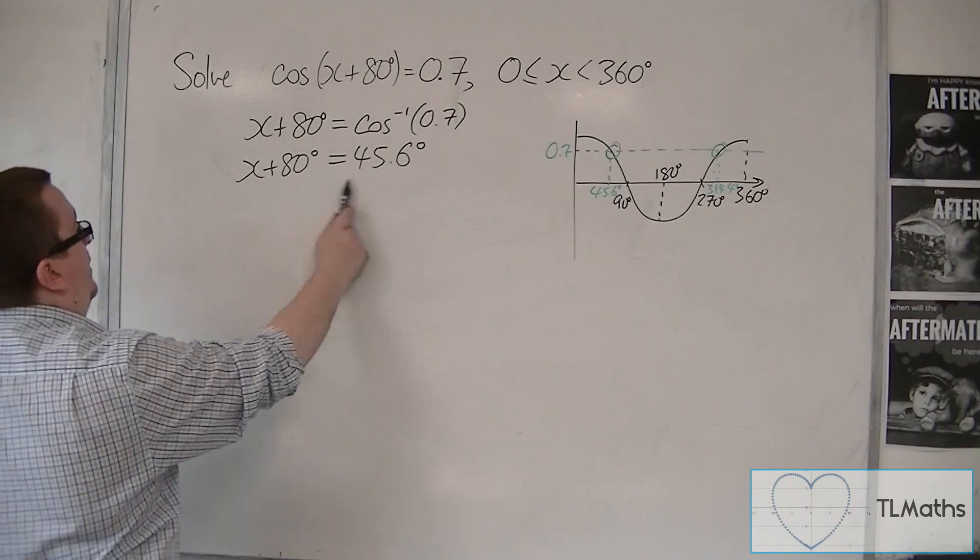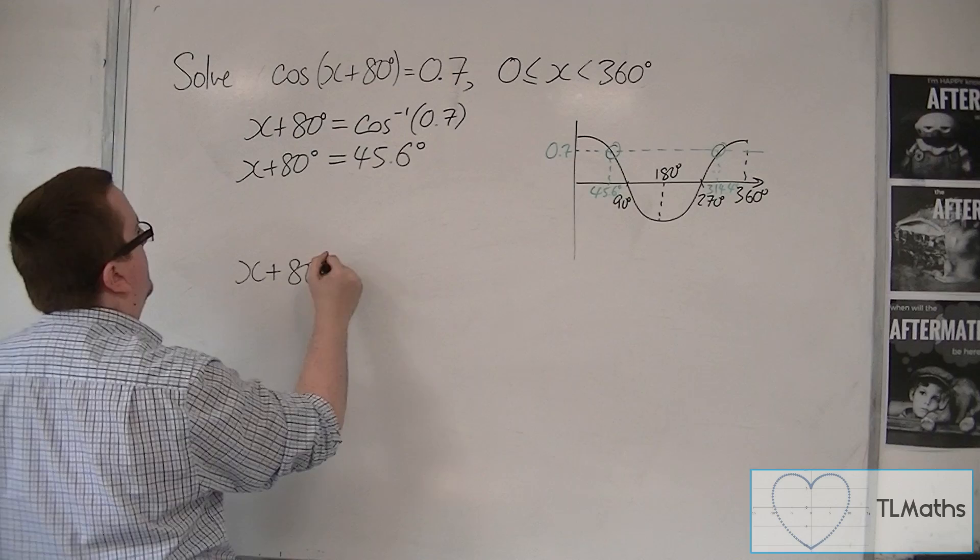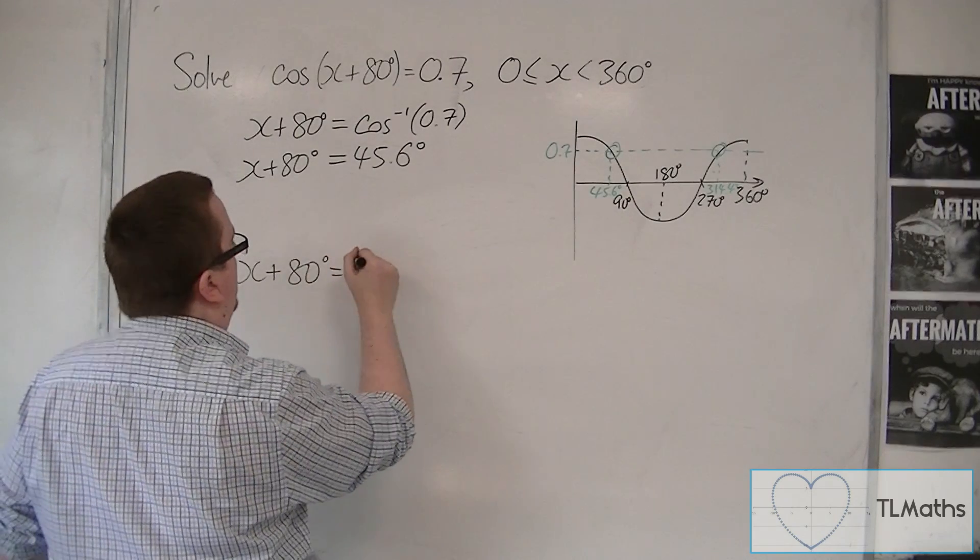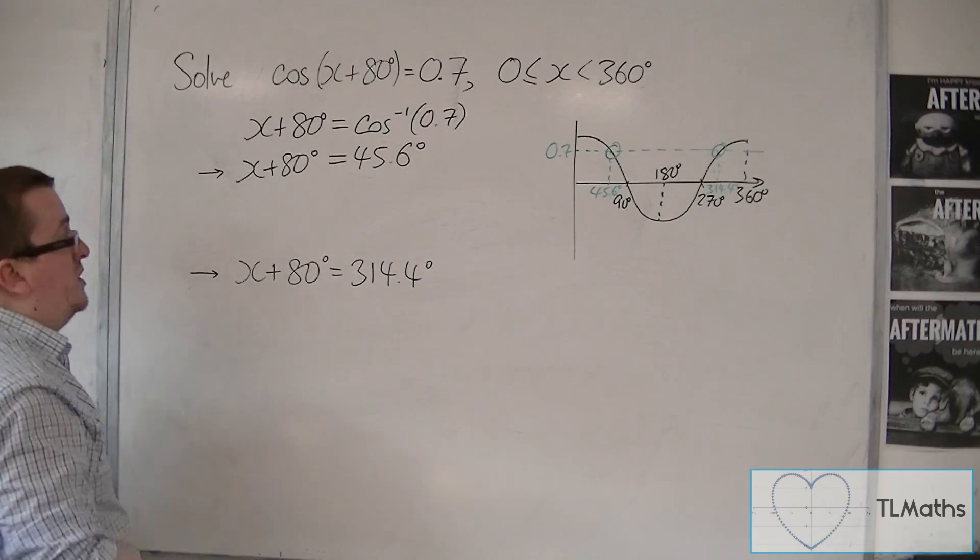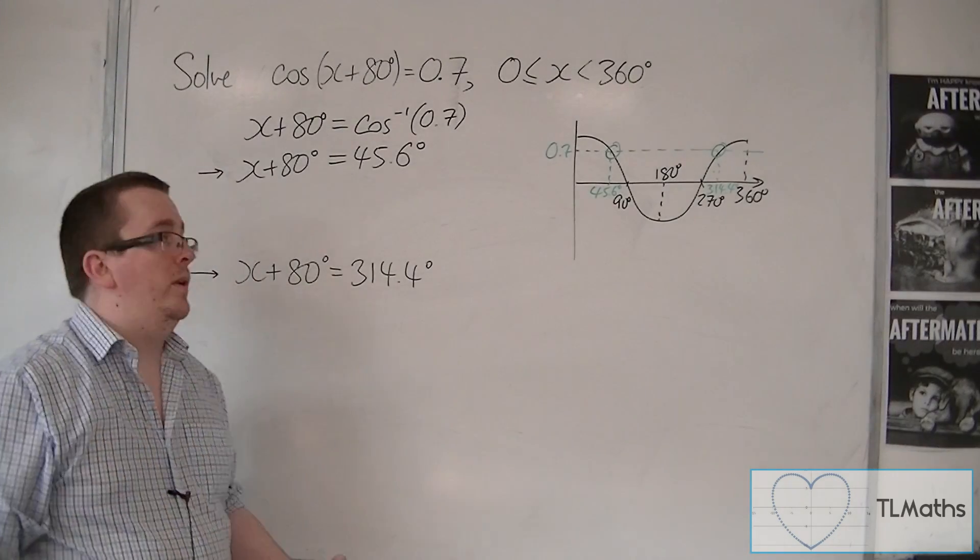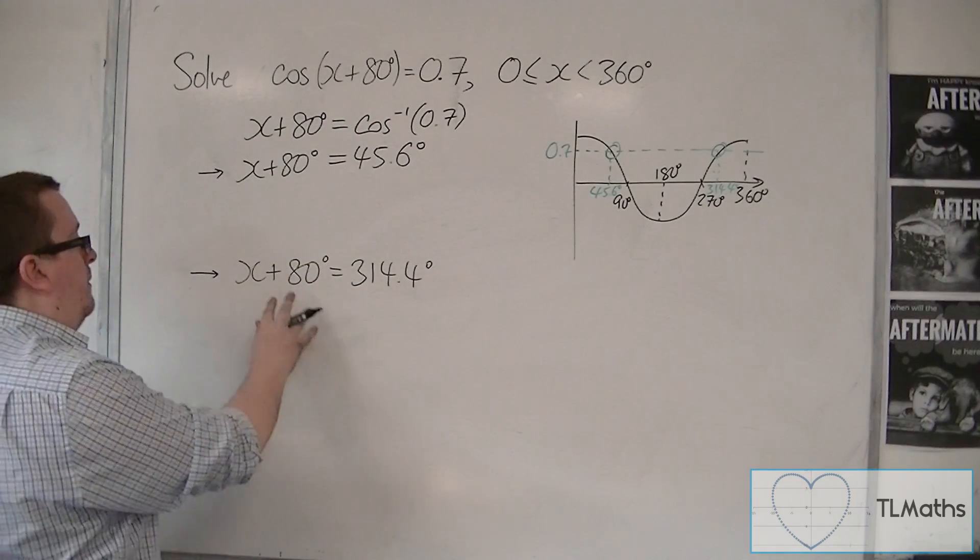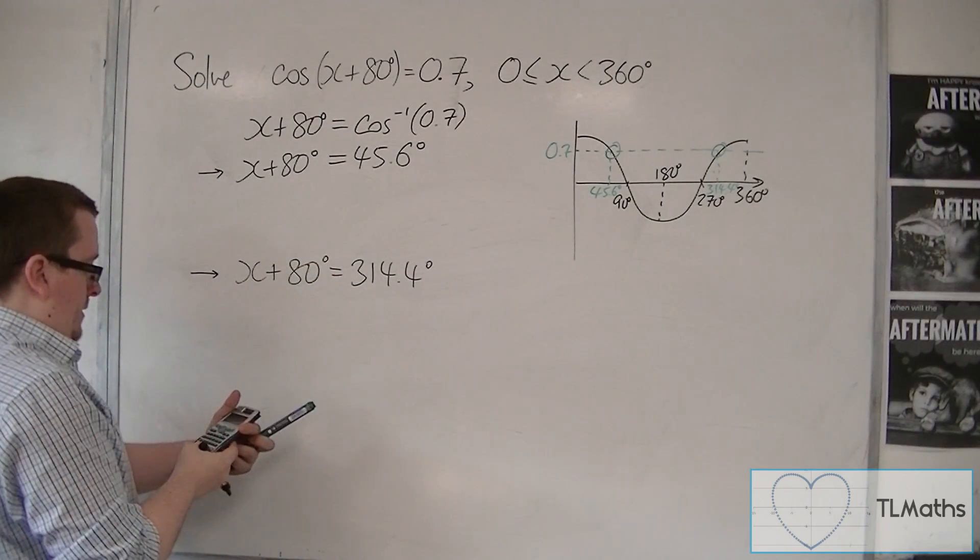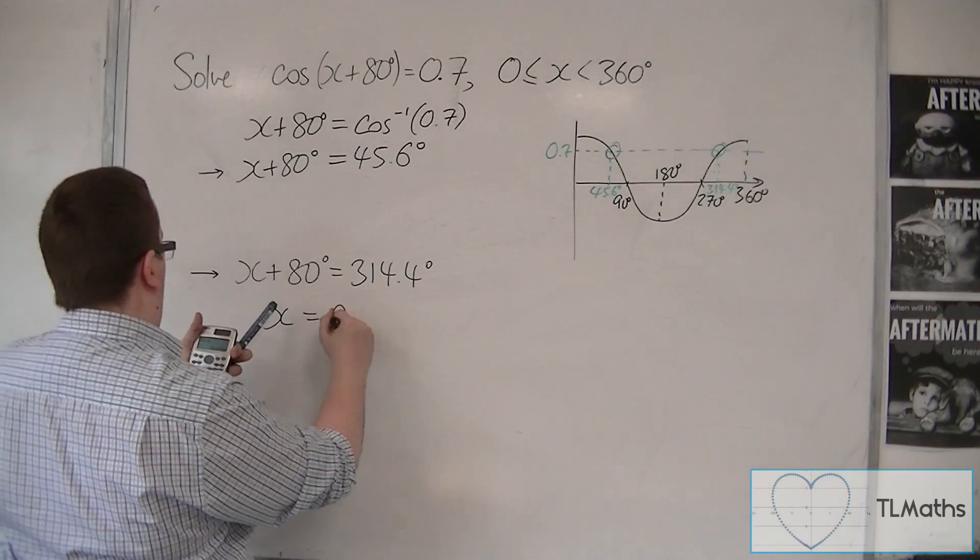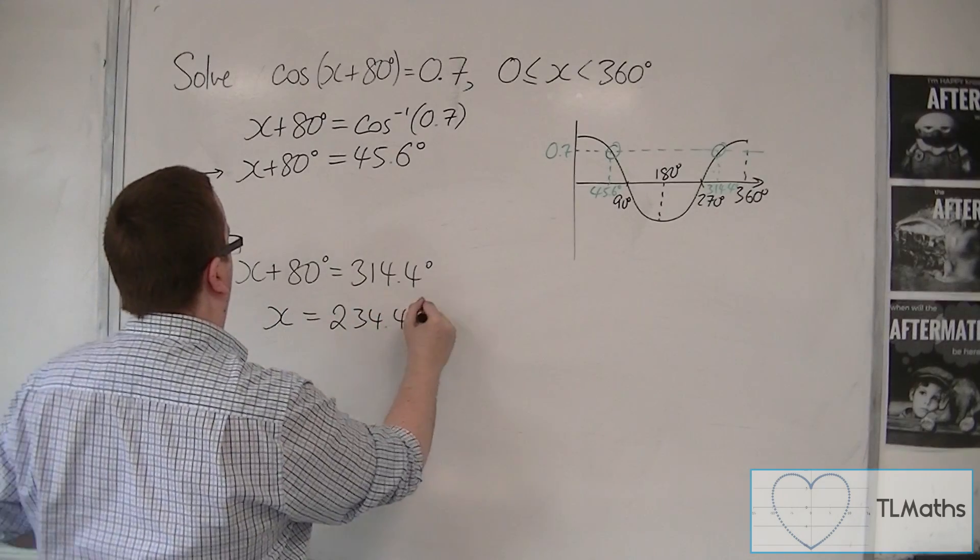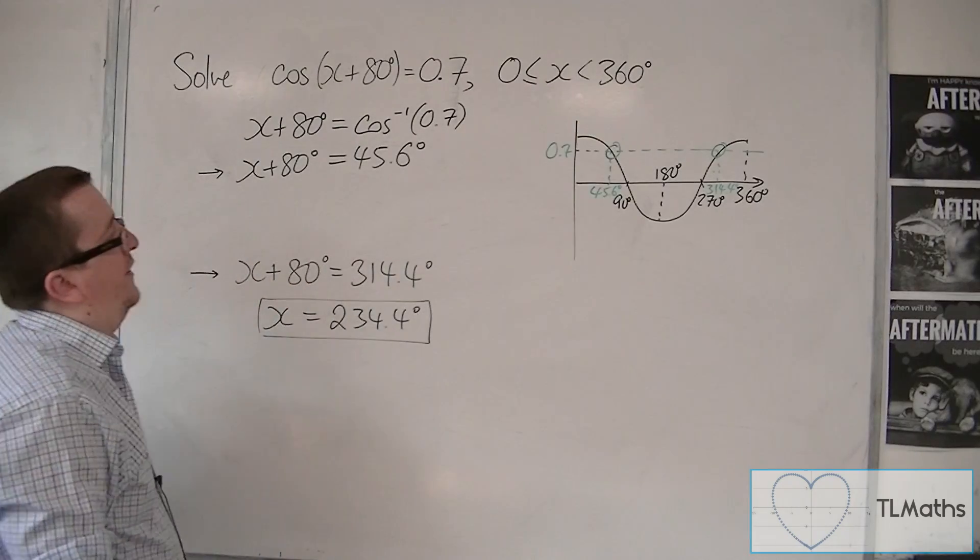I have x plus 80 is 45.6, and I have x plus 80 is 314.4 degrees. These are the two equations that I now work with. I'm going to subtract 80 from this one first, seeing as I've got that number ready. That will give me x is 234.4 degrees, and that is one of my final solutions because it's between 0 and 360.